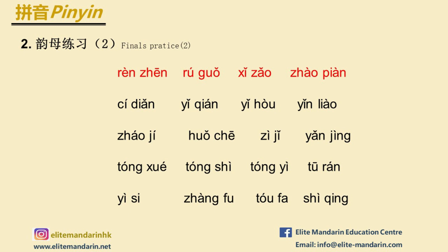Read the disyllabic words aloud: 认真, 如果, 洗澡, 照片, 词典, 以前, 以后, 饮料, 着急, 火车, 自己, 眼镜, 同学, 同事, 同意, 突然, 意思, 丈夫, 头发, 事情.